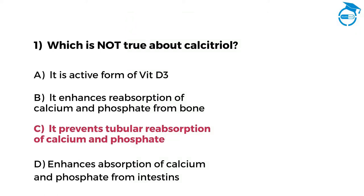I hope you got it right. The correct option is C, that is calcitriol prevents tubular absorption of calcium and phosphate.